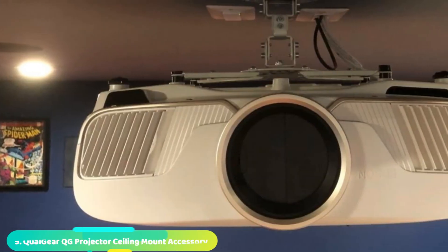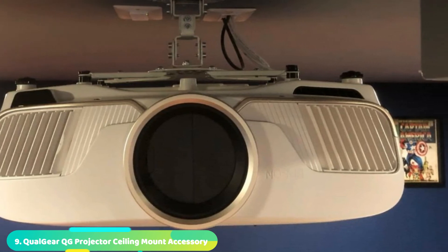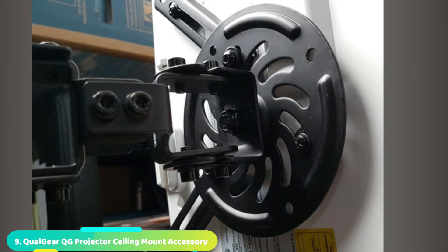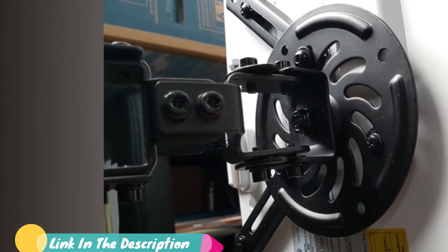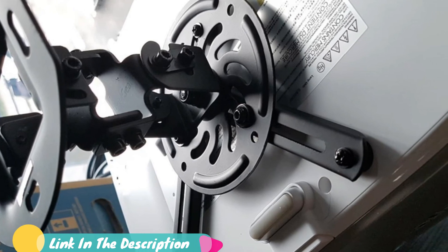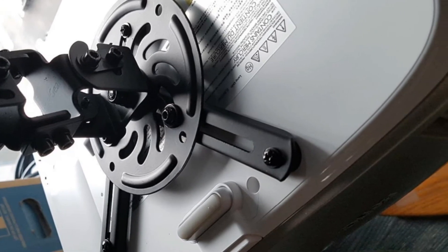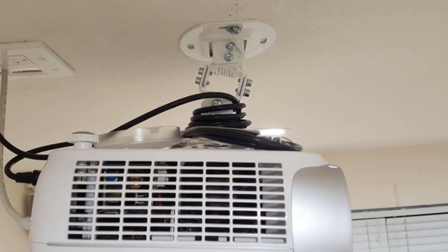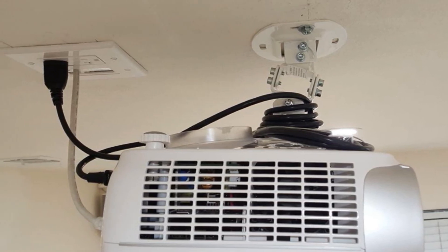Next at number nine, we have Qualgear QG Projector Ceiling Mount Accessory. By now, you know that we love Qualgear's projector mounting systems. Qualgear QG Projector Ceiling Mount Accessory is like the little brother model to some of their others because it doesn't actually extend like the others in this lineup. Instead, you have about six inches of clearance from the ceiling. That's the perfect distance for the 15-degree up and down motion and allows you to use the full 360 swivel function with ease.